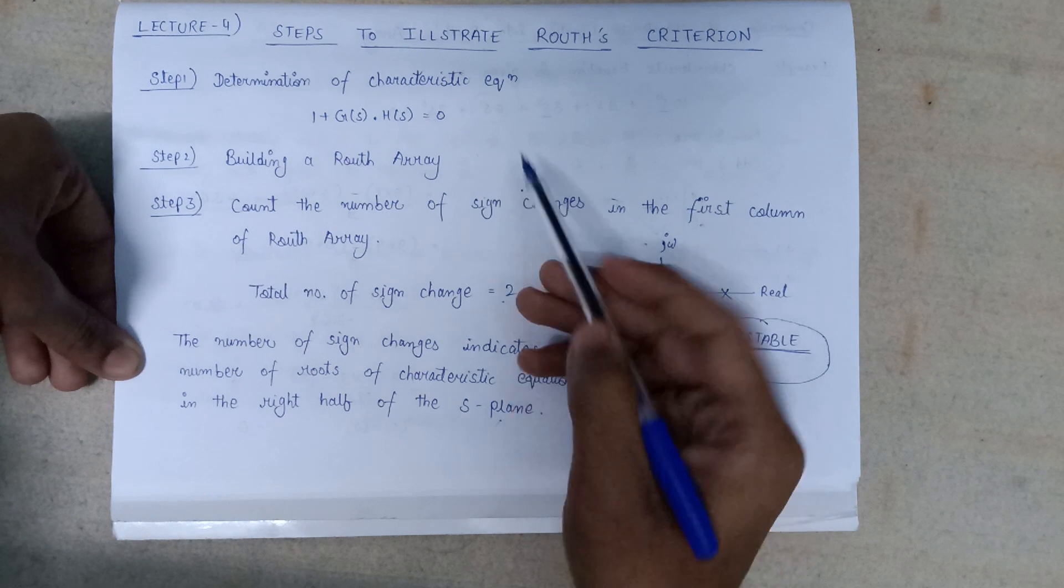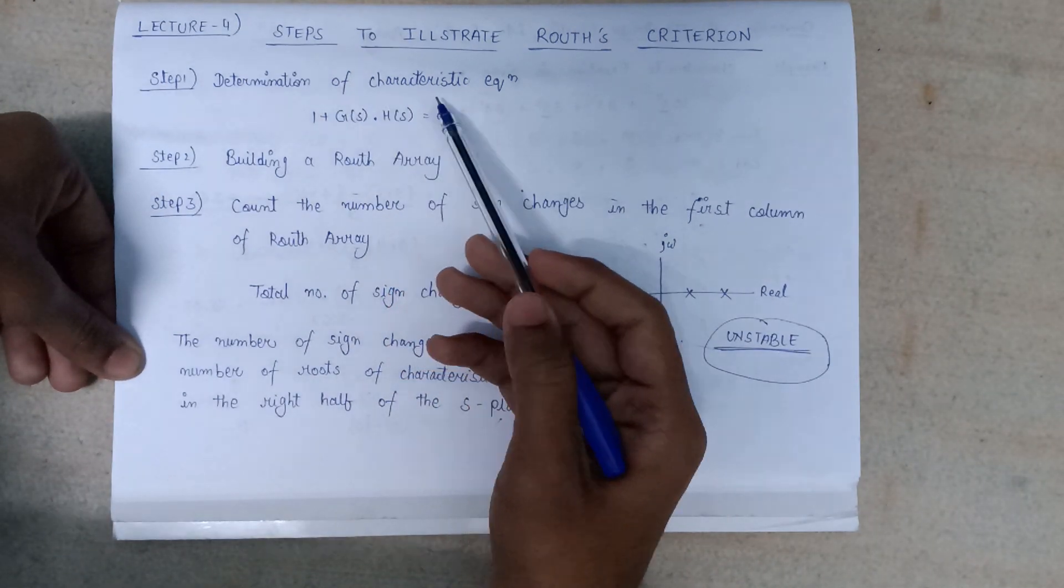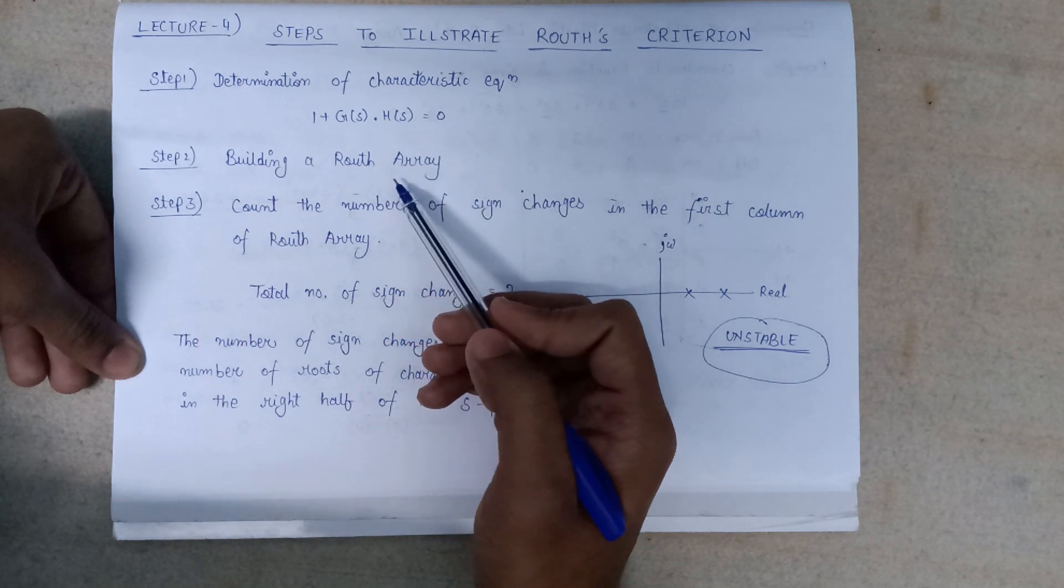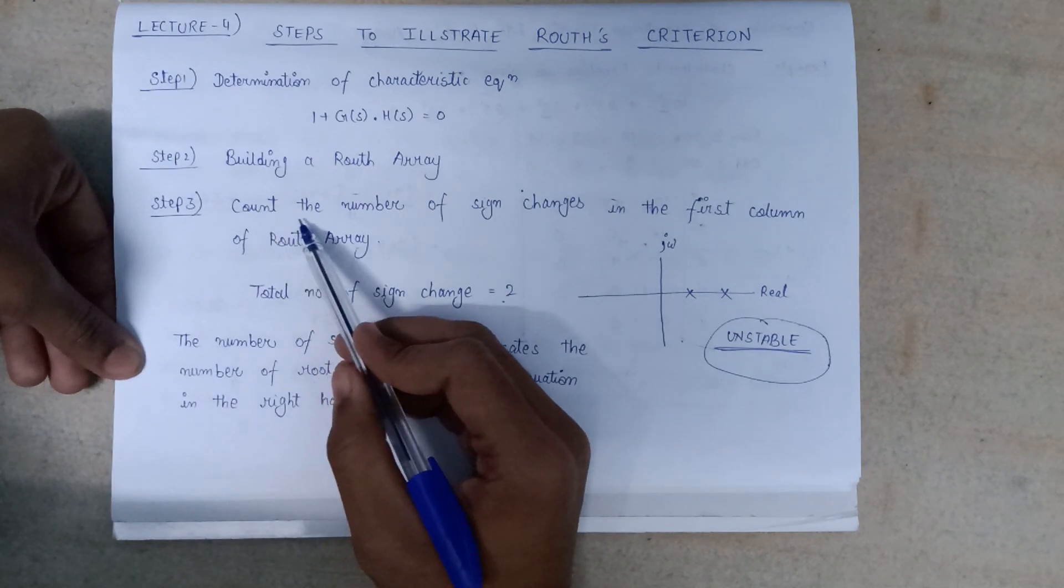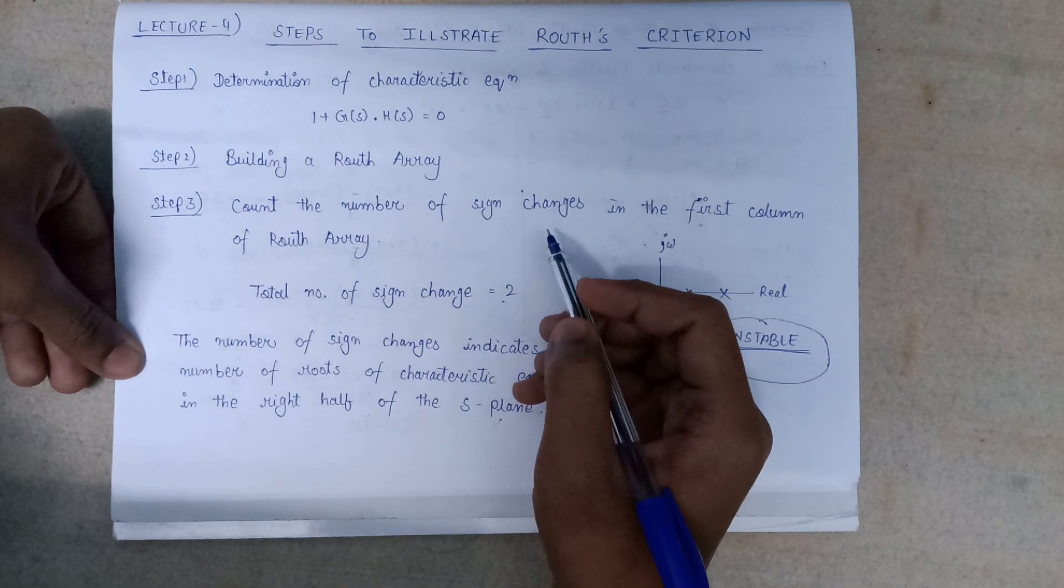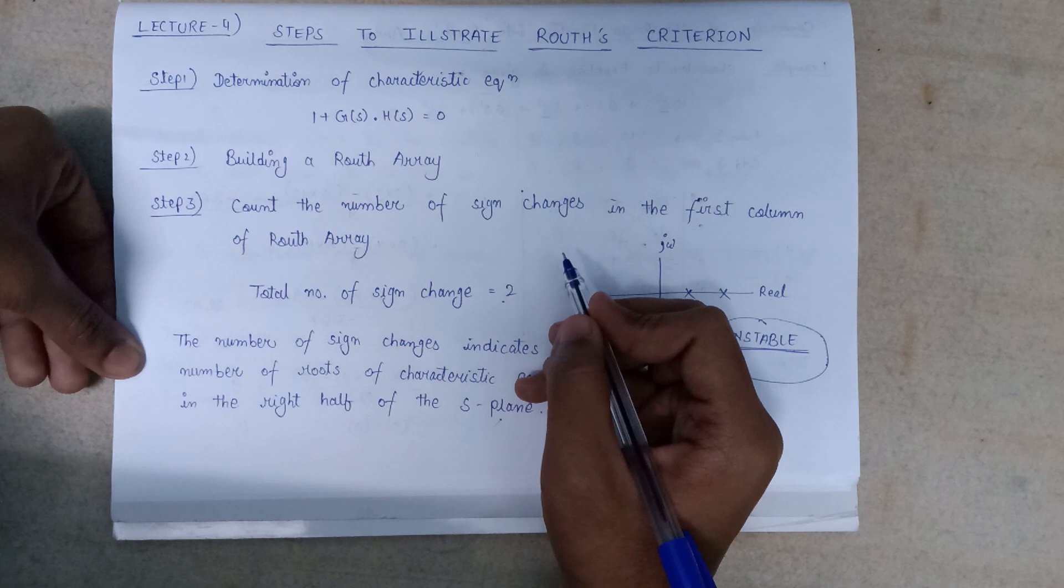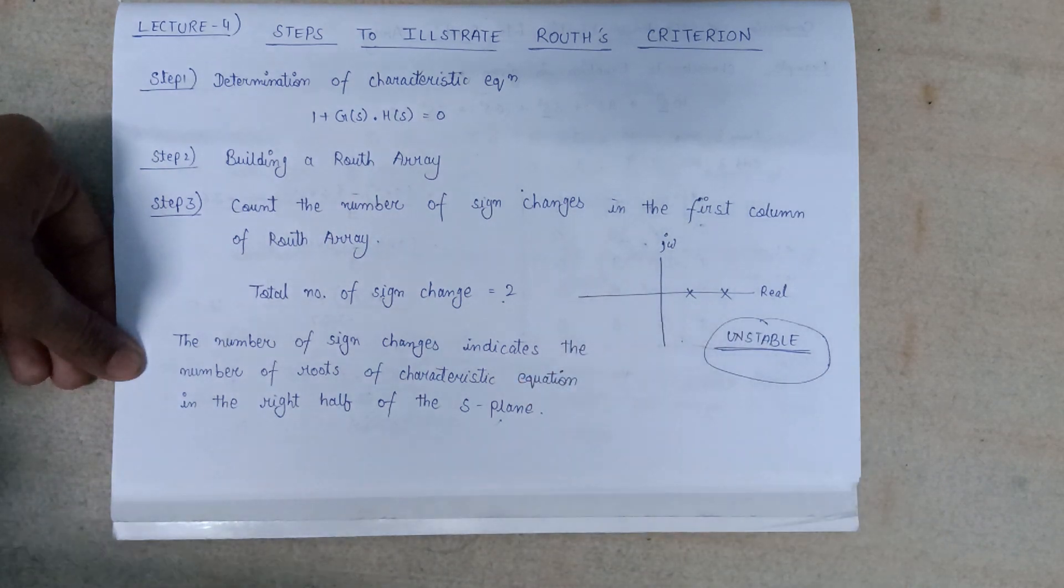So in this way, by following the three steps - step 1, determination of characteristic equation; step 2, formation of Routh array; and step 3, counting the number of sign changes in the first column of Routh array - we can check whether the system given to us is stable or not. Thank you.